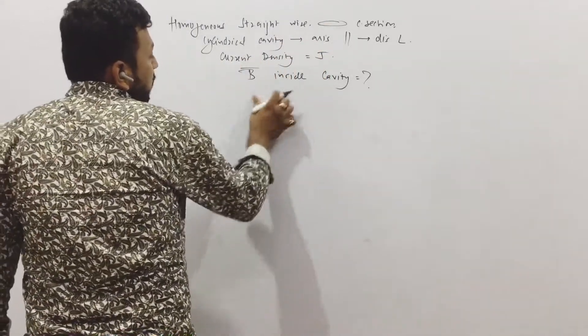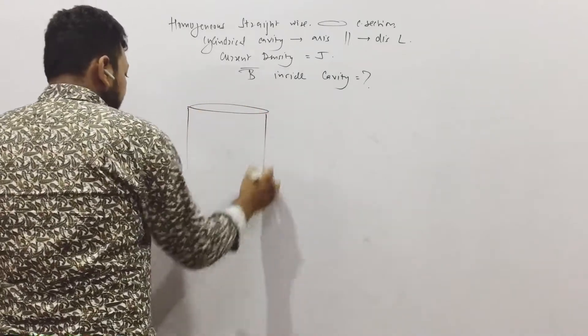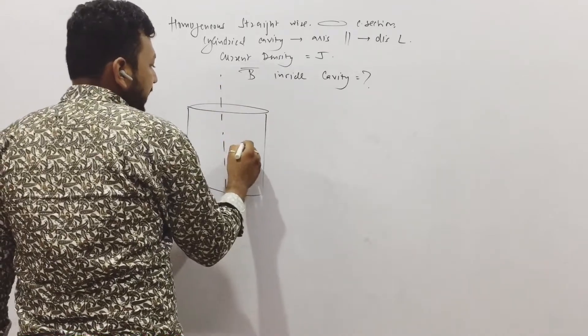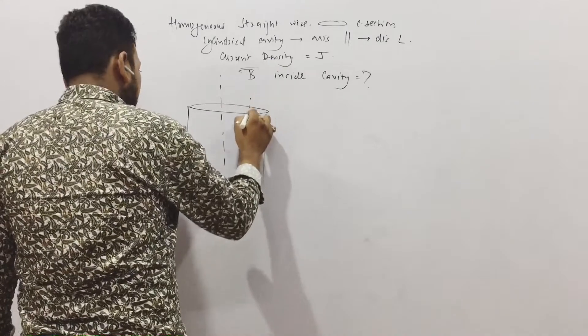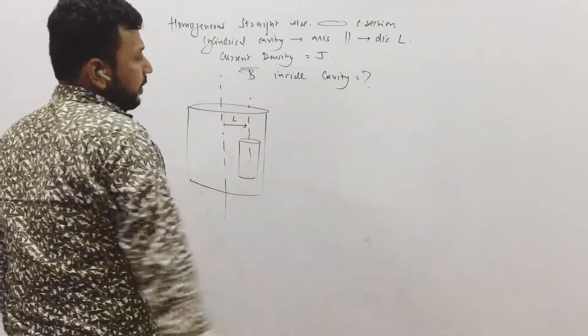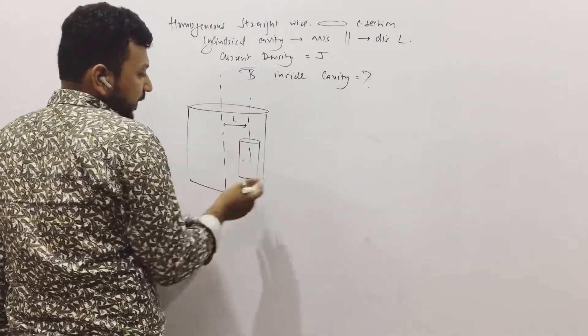First of all, formation of diagram is very important in physics. Let us form the diagram. This is a wire and there is a cavity inside this, a cylindrical cavity whose distance from this axis is set into a distance of L. We need to find the magnitude here inside the cavity.